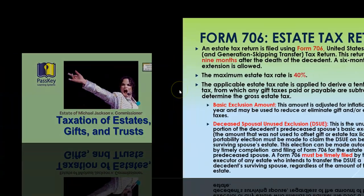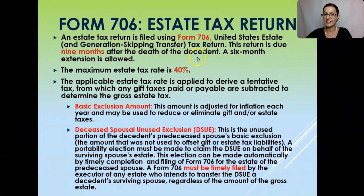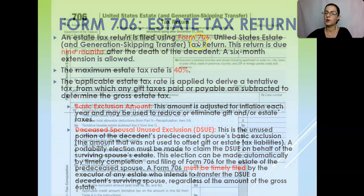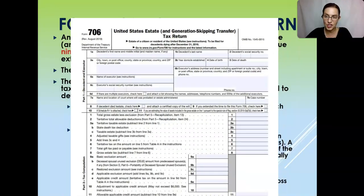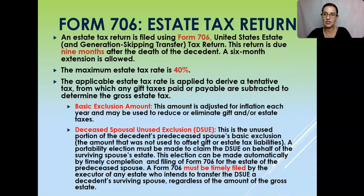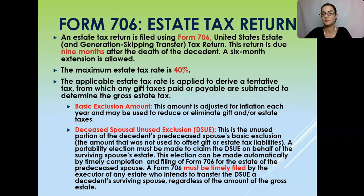Let's talk about Form 706, which is the estate tax return. An estate tax return is filed using Form 706. Remember — six feet under. If a person is six feet under, they file Form 706. Form 709 is for gifts, so remember the difference between those two form numbers.